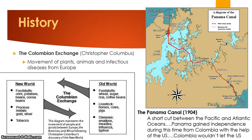The Panama Canal, which was started and completed in 1904, was a shortcut between the Pacific and Atlantic Oceans. It saved many weeks of time in shipping from, say, New York to Asia, because instead of sailing all the way around South America and Cape Horn and going back up north to Asia, you could now cut through the Isthmus of Panama.